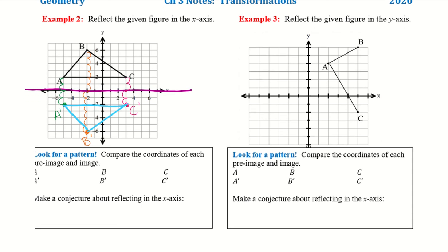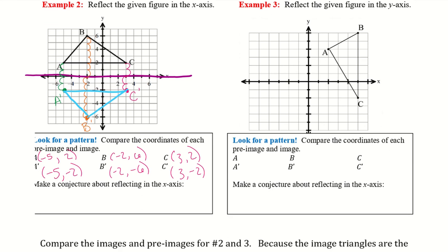Comparing coordinates: A is (−5, 2), B is (−2, 6), and C is (3, 2). A prime is (−5, −2), B prime is (−2, −6), and C prime is (3, −2). What do you notice between these points? The X values are the same, and the Y values change sign.